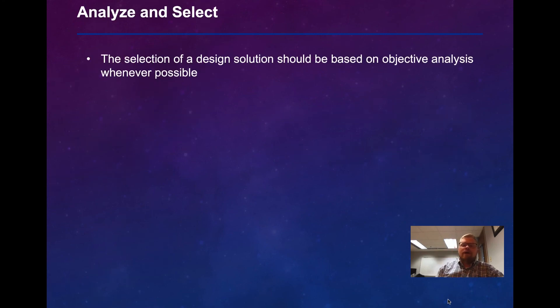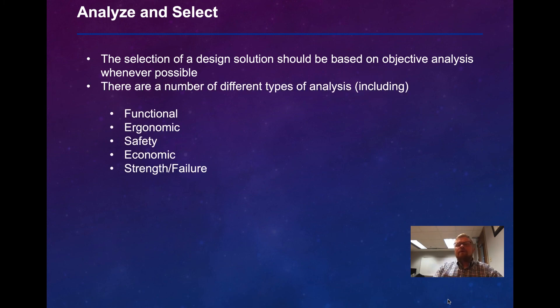The step we're going to pick up on is analyze and select. We should use an objective form, not just a gut feel. We need to actually use objective analysis whenever possible to make decisions. There are a number of different types of analysis that you can do, including functional, ergonomic, safety, economic, strength, and failure analysis.